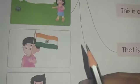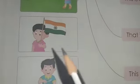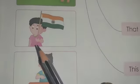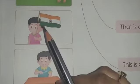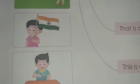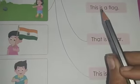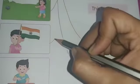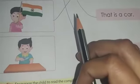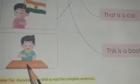Next, this boy is holding a flag — the flag is near to him, right in his hand — so the sentence will be 'This is a flag'. We will match this picture with the sentence 'This is a flag'.